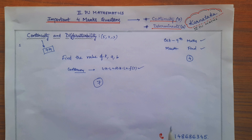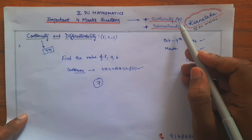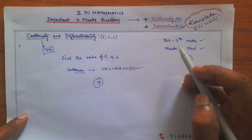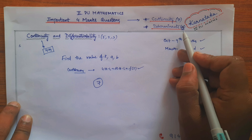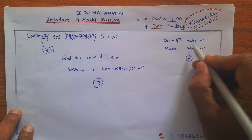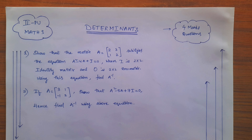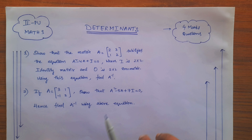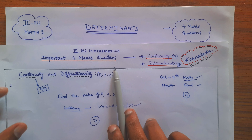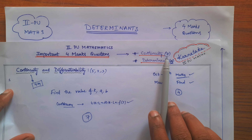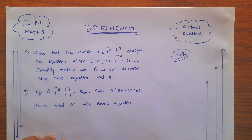Hello everyone. In part 1 video, as we discussed earlier, for the mid-term when it comes to 4-mark questions, we will get questions from 2 chapters: continuity and determinants. In continuity, 7 questions were discussed; in determinants, 4 questions, but only 2 questions will appear. So with those 2 determinant questions, prepare well — 100% one question will come for the exam.